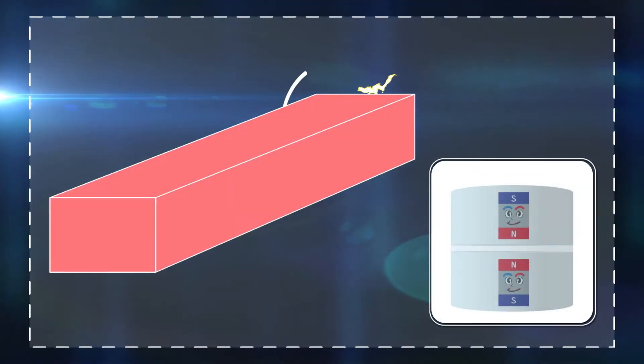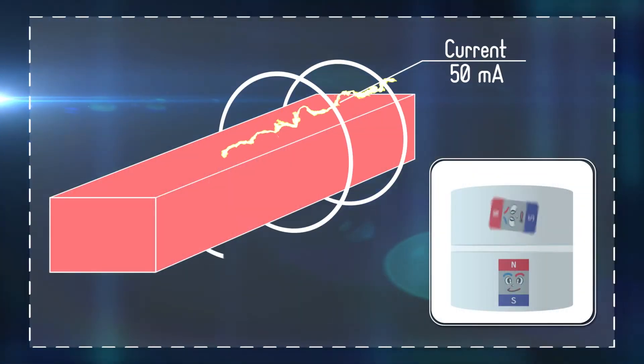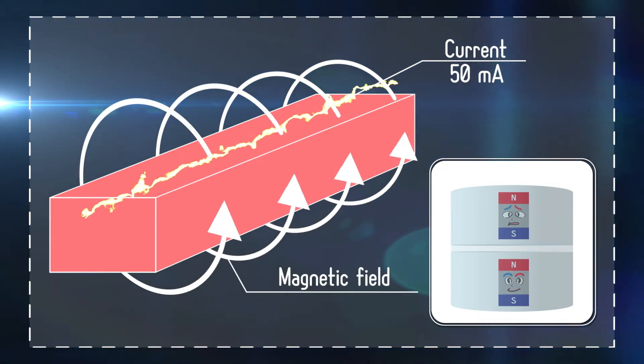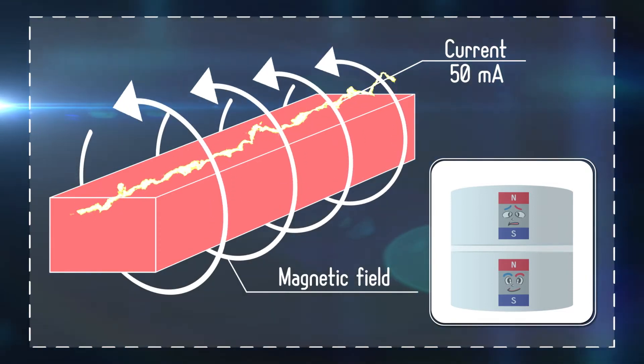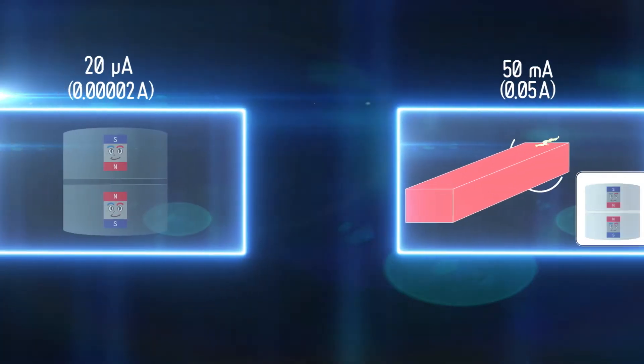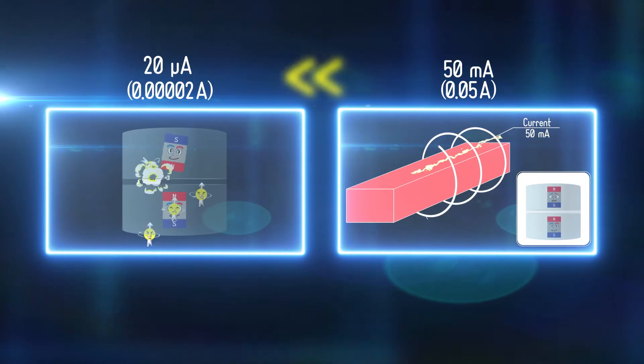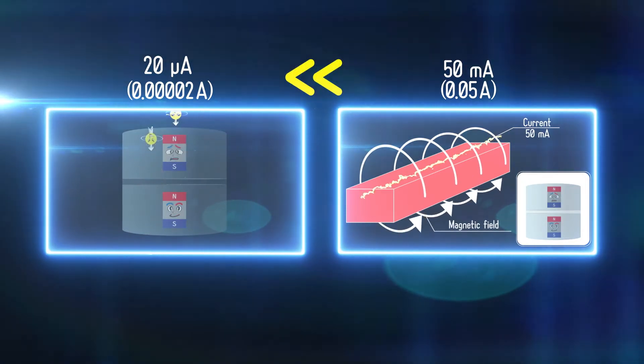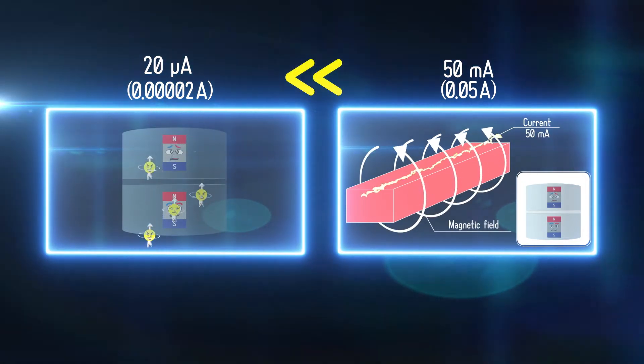Here, if you attempted to reverse the magnetization using a magnetic field based on classical Ampere's law, you would need about 50 milliamps. So, in this case, the principle of spintronics allows us to control the magnetization with thousands times higher efficiency.